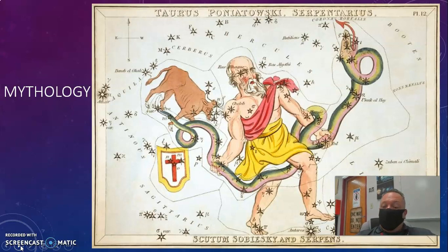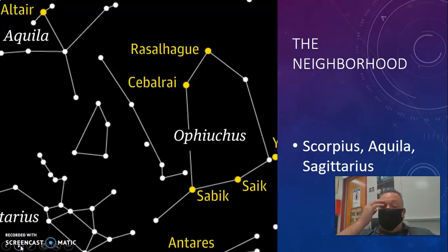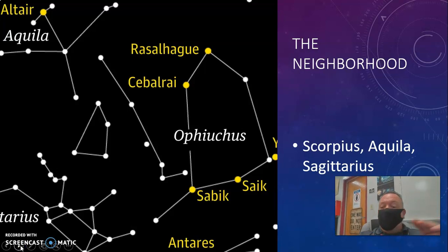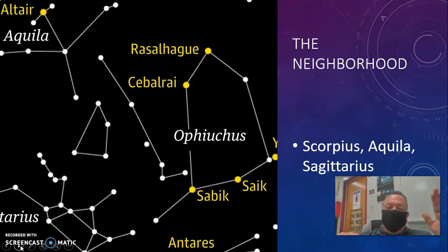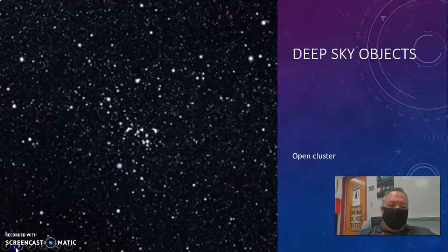Maybe the second person in the group can show a picture of what Ophiuchus looked like in mythology, a little bit about the story behind it and what that's supposed to represent. The second person also might then have a picture showing the neighborhood — to find it, Ophiuchus is located north of Scorpius and south of Aquila, things like that.